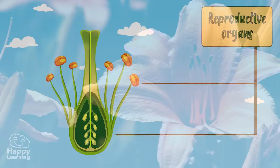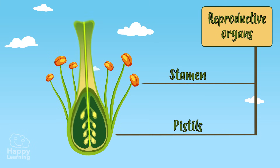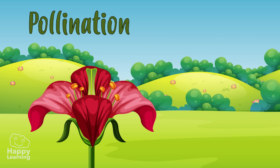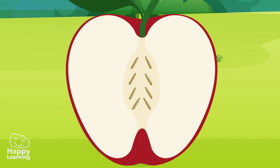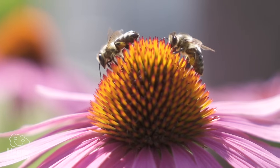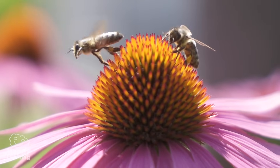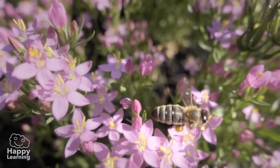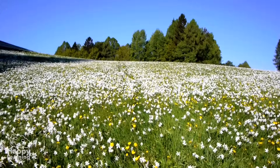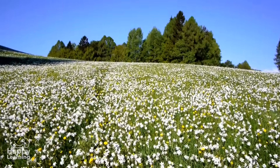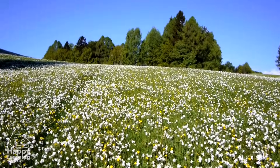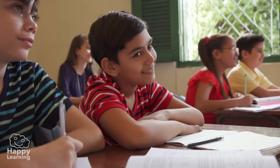Do you want to know the parts of a flower and learn what the stamen and pistil are? Do you want to discover the pollination process and how fruit is formed? Do you want to know the importance animals and plants have towards the balance of life? Then click on this link and you'll be able to watch the whole video on plant sexual reproduction. I'm sure you'll get an excellent grade on your exam! Goodbye friends, see you in the next Happy Learning video!